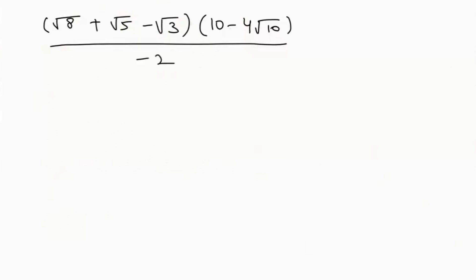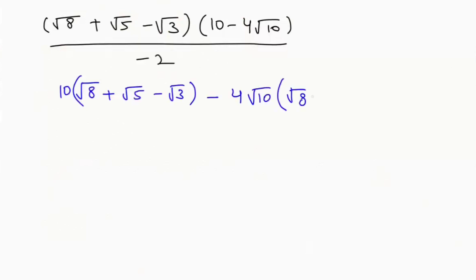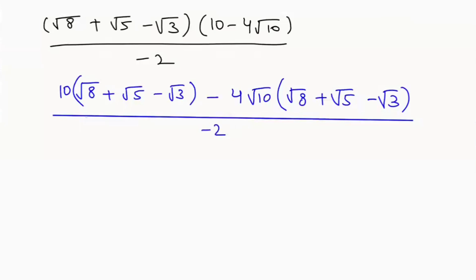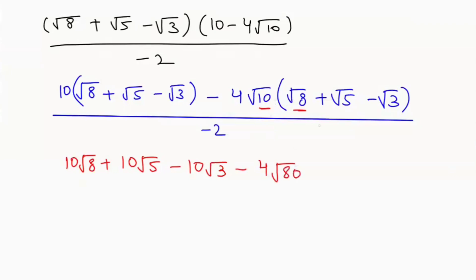Now we multiply 10 with the whole bracket: 10 times (root 8 plus root 5 minus root 3), and here minus 4 root 10 times (root 8 plus root 5 minus root 3), over minus 2. Multiplying gives: 10 root 8 plus 10 root 5 minus 10 root 3, minus 4 root 80 plus 4 root 50 minus 4 root 30, over minus 2.